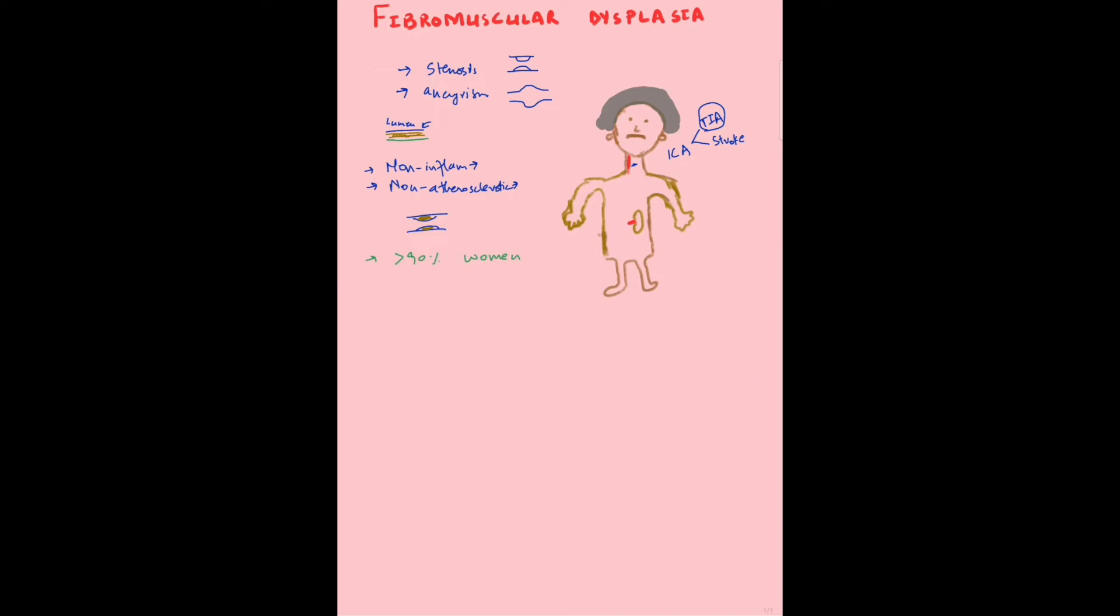Another common vessel affected is the renal artery. When it's obstructed, it can result in increased release of renin. If the renal artery is obstructed in fibromuscular dysplasia, the kidney will think there is hypotension or decreased blood in the body.